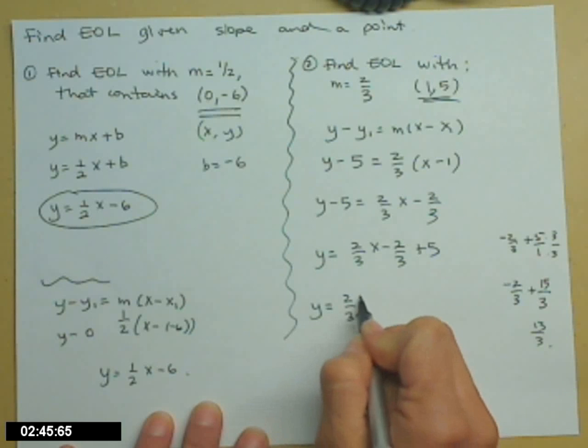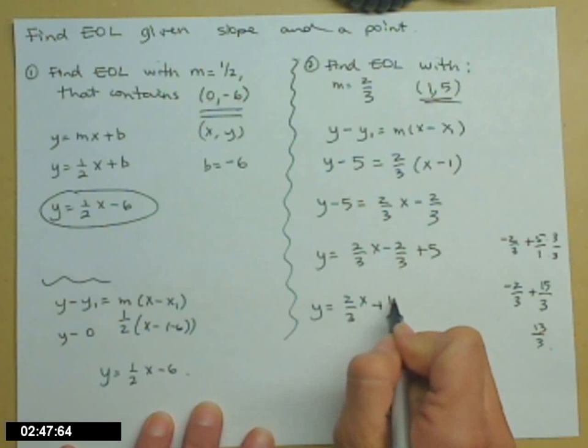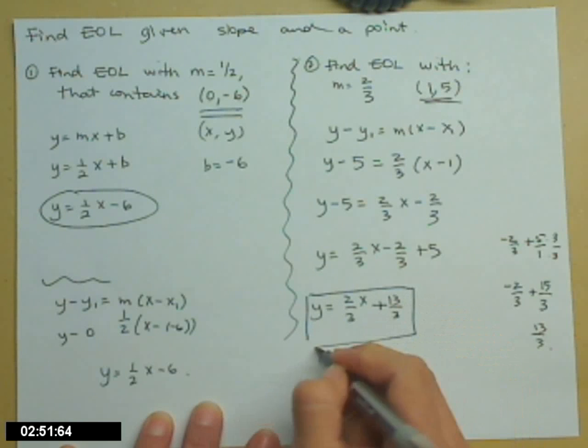y equals 2/3 x plus 13/3. We know what our slope is and we know what our y-intercept is.